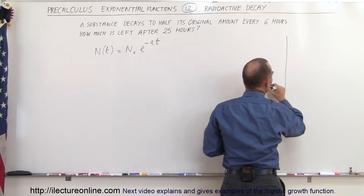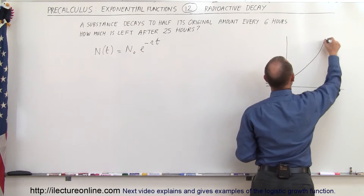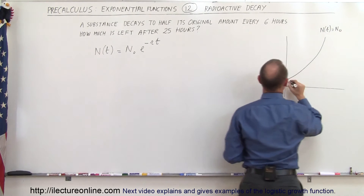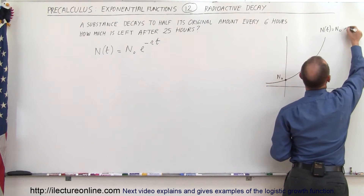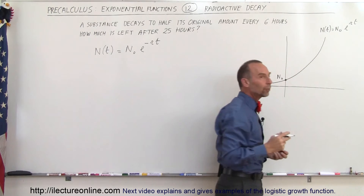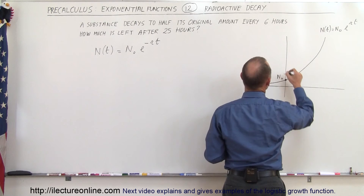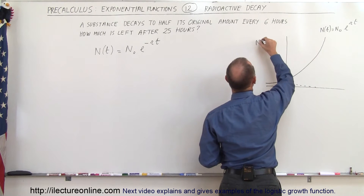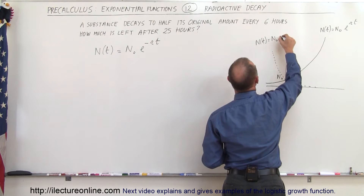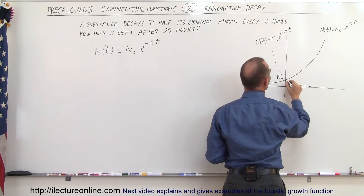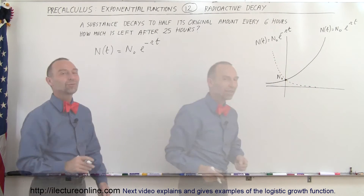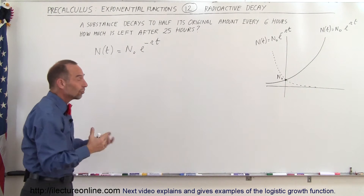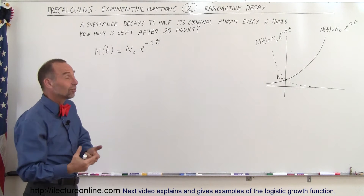Looking at a graph, a normal exponential function looks like this — N as a function of time equals the initial amount times e to the rt. But when we have a negative in the exponent, the function looks like this: N(t) = N₀·e^(-rt). You start with the initial amount and over time you have less and less — that's exponential decay instead of growth.